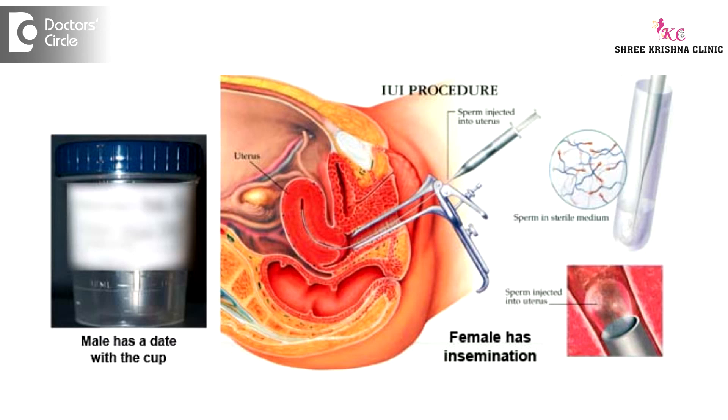Coming to vaginal problems — these are usually infections, which we treat with medications. If there are any septum, we will surgically correct them. If there is no vagina at all, we can even create the vagina.